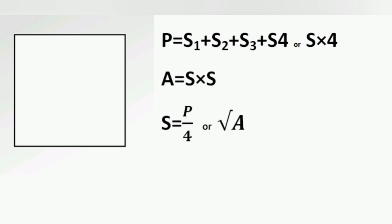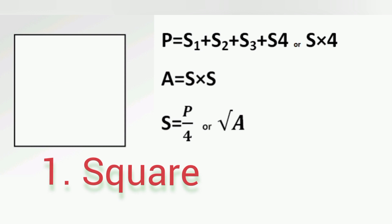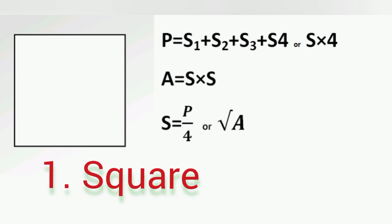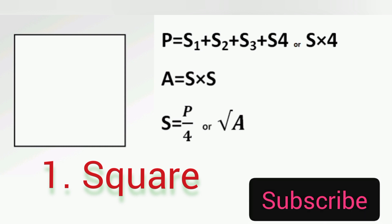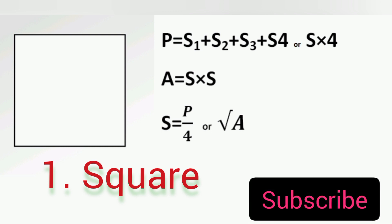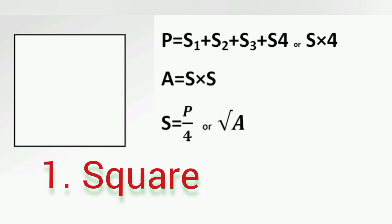Number 1: Square. Square is a shape with 4 equal sides. The perimeter of a square is equal to side 1 plus side 2 plus side 3 plus side 4, or is equal to side times 4.